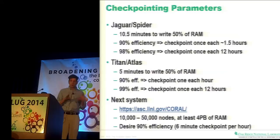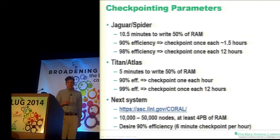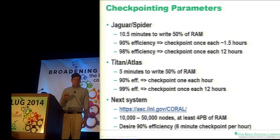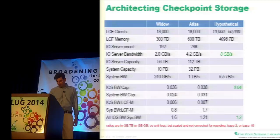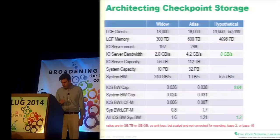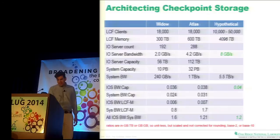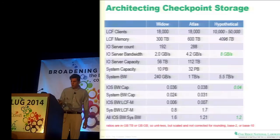It's unclear exactly what this system is going to be. I took the CORAL proposal and broke it down. Some published guidelines: 10,000 to 50,000 nodes — a really big range — and at least four petabytes of RAM for the system. We've talked about the desire for a six-minute checkpoint. If we built a hypothetical storage system based on that, we'd need about 5.5 terabytes per second to stream out two petabytes of RAM. If IO servers are roughly based on EDR at about 8 GB/s, and we hold the bandwidth-to-capacity ratio and storage system overhead constant, we'd build a system with 825 IO servers.